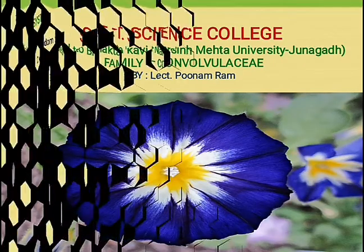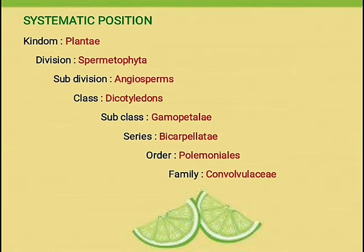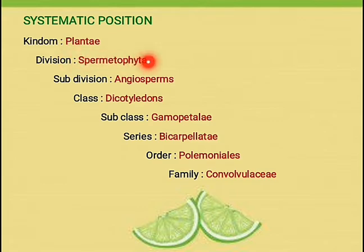First of all, we talk about the systematic position of Convolvulaceae according to Bentham and Hooker classification system. Kingdom Plantae: the cell wall is made up of cellulose, no locomotion, only movement, and autotrophic mode of nutrition. Next division, Spermatophyta: produces flowers during their life cycle, sex organs are multicellular. After fertilization, ovules turn into seeds and embryo formation occurs.